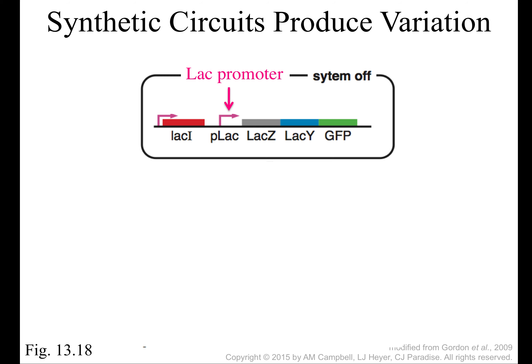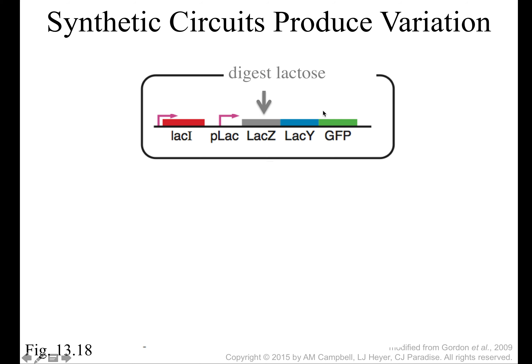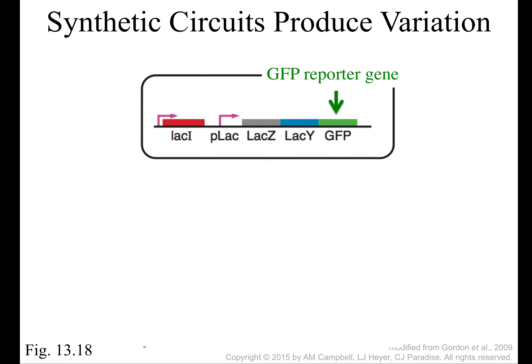Another way to think about how variation interacting with the environment can influence phenotype involves our old buddy, the lac promoter. They engineered the DNA of a bacterium so that in the original lac operon — lac Z, lac Y, and A — they replaced A with GFP, green fluorescent protein. Normally, the lac I gene makes a repressor protein which binds the operator, keeping the operon off.